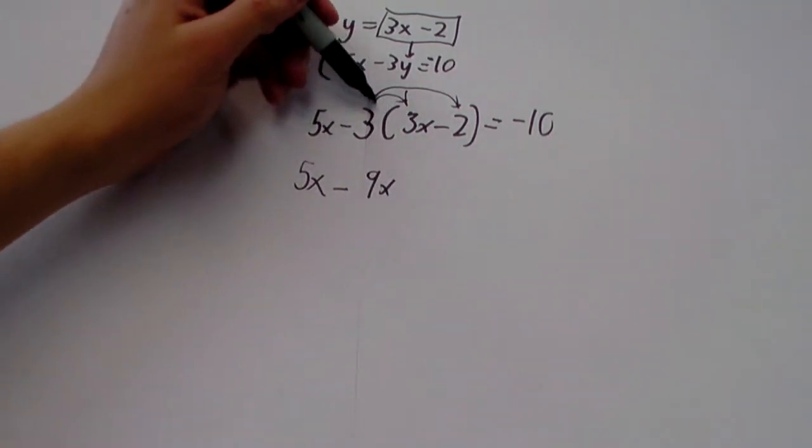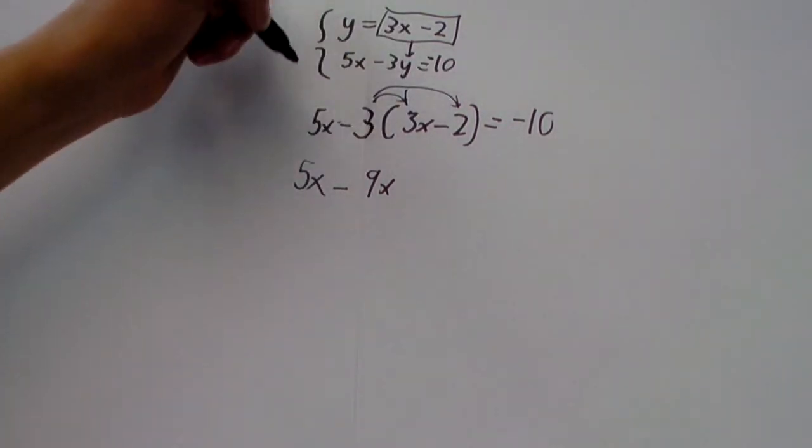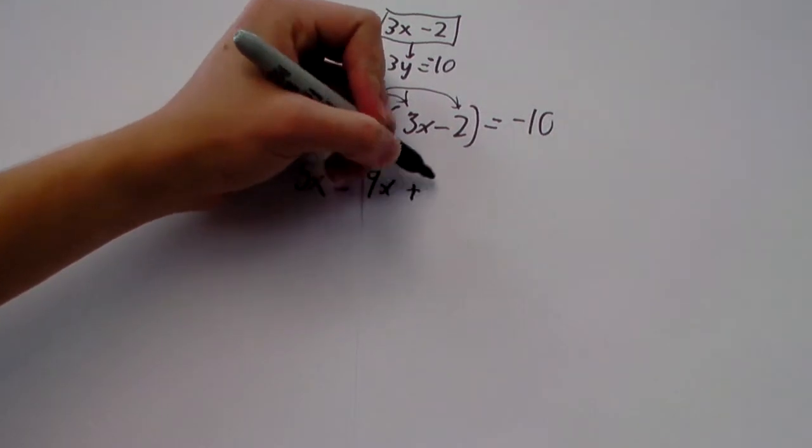giving us 5x minus 9x, because this is a negative 3 here that we're distributing, so negative 3 times 3x is 9x. And then negative 3 times negative 2 is positive 6, so plus 6.